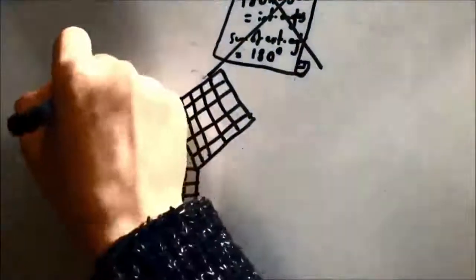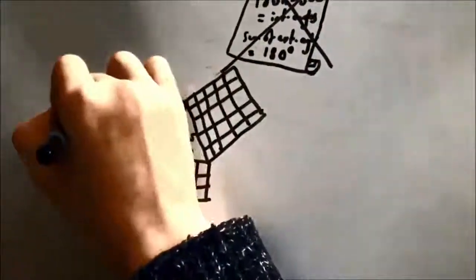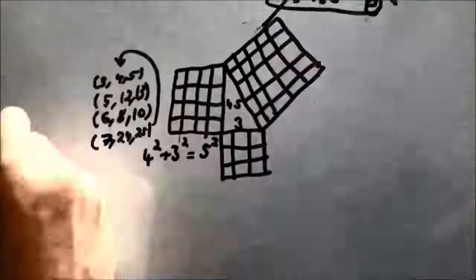A is commonly shown as 4, b is 3 and c is 5. This is known as a Pythagorean triple. There are many of these, for example, 5, 12 and 13 and 6, 8 and 10.